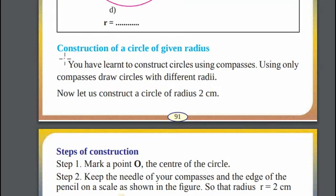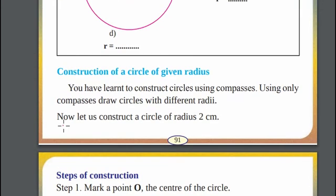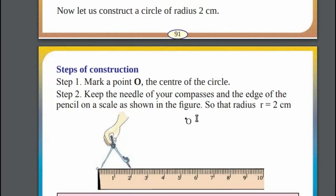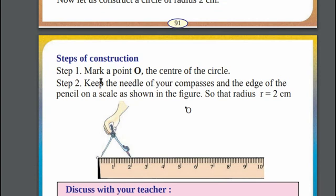Construction of a circle for a given radius. Now, let us construct a circle of radius 2 cm. Steps of construction. Step 1. Mark point O on a sheet of paper and name it as O. This will be our center of the circle of radius 2 cm.